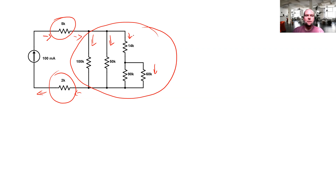A lot of times what messes people up is finding this equivalent resistance. When you're using voltage divider and current divider, REQ is specifically the resistance of the collection of resistors in parallel that you're trying to find the current through one branch of, or the collection of resistors in series that you're trying to find the voltage across one particular resistor of. You don't want to use the equivalent resistance of the whole circuit — only the equivalent resistance of that portion to which you're applying current divider or voltage divider.